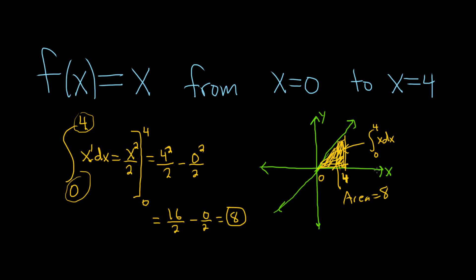Area is 8. We can do it another way. We can use geometry. So recall that the area of a triangle is equal to 1 half base times height.